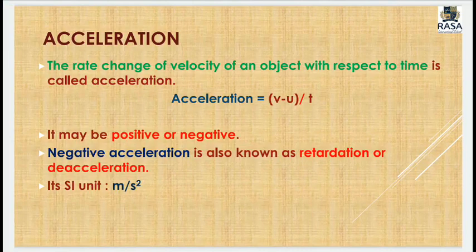Acceleration can be positive or negative. Positive acceleration occurs when the final velocity is greater than the initial velocity — for example, if you start at 10 m/s and after 5 seconds you are at 30 m/s, then acceleration = (30 − 10) / 5 = 4 m/s². Negative acceleration is given the special name retardation or deceleration, but the SI unit remains meter per second squared.